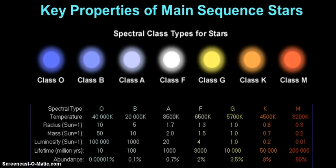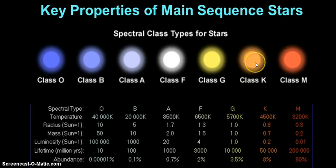The temperature in Celsius is slightly different, but anyway. For number 11, Pollux appears what color? Remember that Pollux is a type K, and K's are orange.